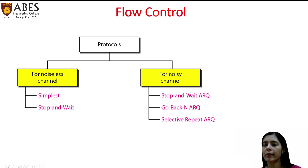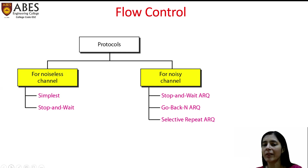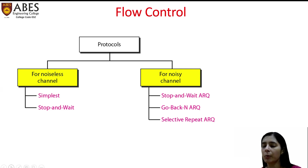In lecture six, we will discuss flow control protocols, divided into two categories for noiseless and noisy channels. Flow control is needed because if the sender produces data faster than the receiver can handle, frames will be discarded at the receiver's end. For noiseless channels we have the Simplest and Stop-and-Wait protocols; for noisy channels we have Stop-and-Wait ARQ, Go-Back-N ARQ, and Selective Repeat ARQ.